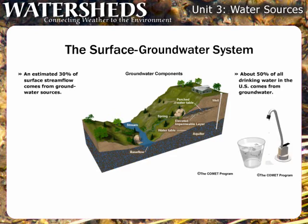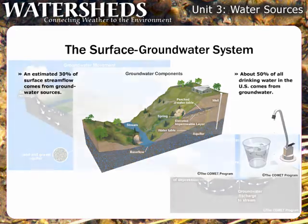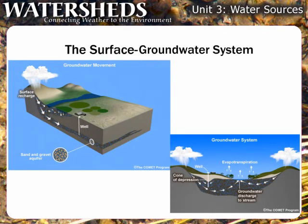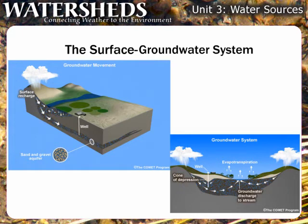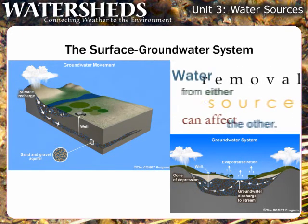Researchers estimate that 30 percent of surface stream flow comes from groundwater sources. Additionally, about 50 percent of all drinking water in the U.S. comes from groundwater. The top of a groundwater aquifer is called the water table. Sometimes the top of an aquifer is confined by impermeable layers of rock or compacted clay. Springs flow from perched aquifers, which occur above elevated impermeable layers. Although surface water and groundwater are often treated as separate resources, they actually form an interconnected system. Surface water bodies can gain water from or provide water to groundwater sources like aquifers.